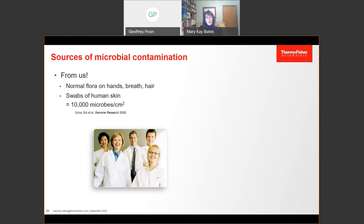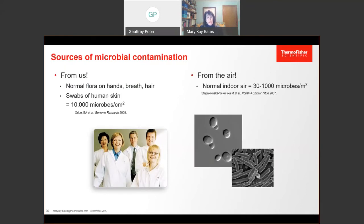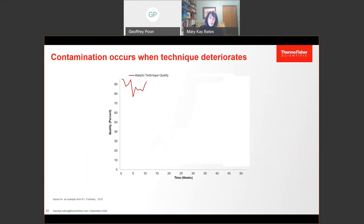If I look at microbial contamination, that's the most common type of contamination. These microorganisms come from us. They are normal flora from every part of our body, and we all carry on average 10,000 microorganisms per square centimeter on our skin. Microorganisms also come from the air around us. Normal indoor room air contains between 30 and 1000 microorganisms per cubic meter. That's a lot of microbes all around us. I want to tell you a little story about how contamination occurs. This graph shows quality on the y-axis and time over the course of one year on the x-axis.